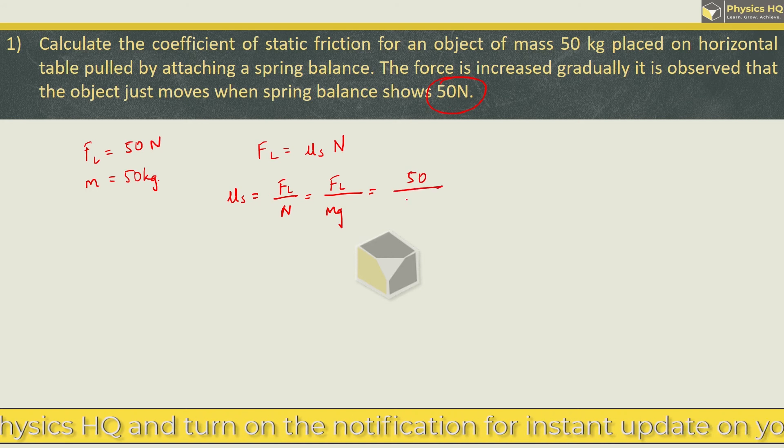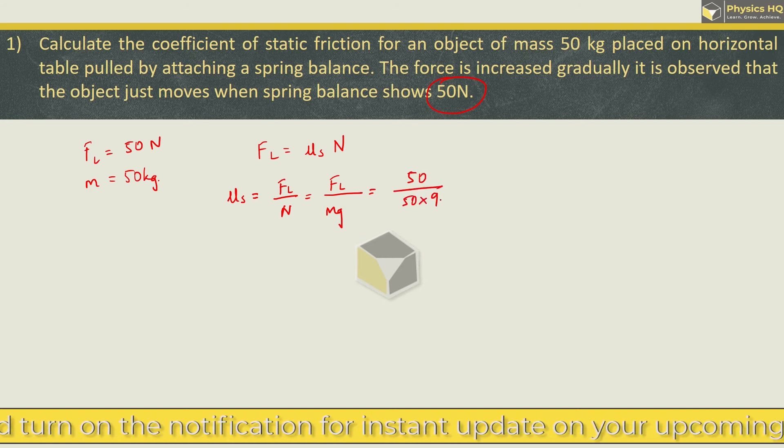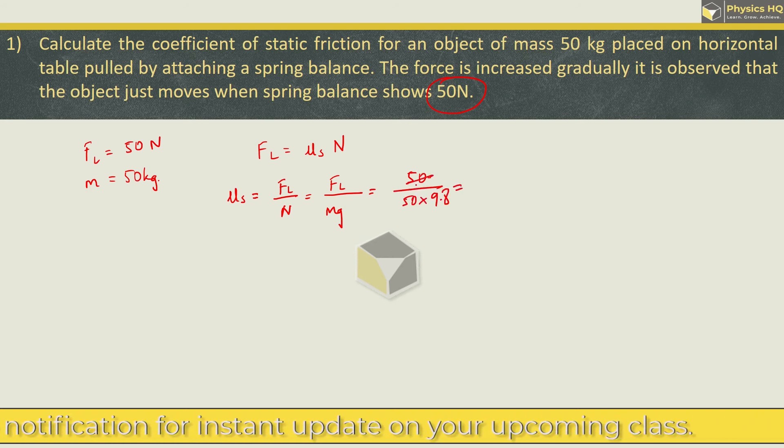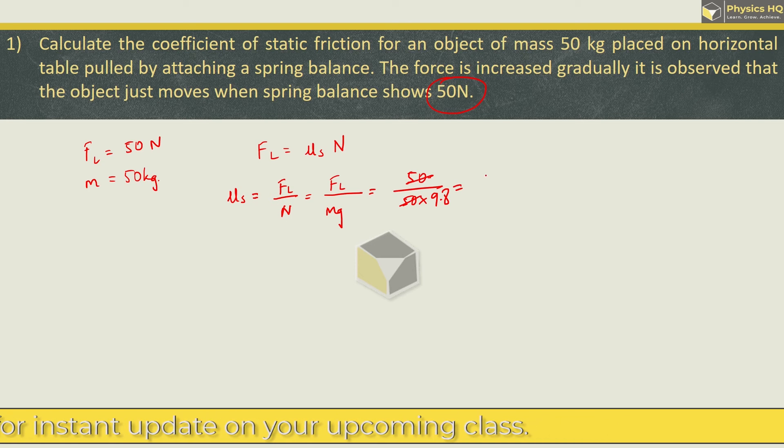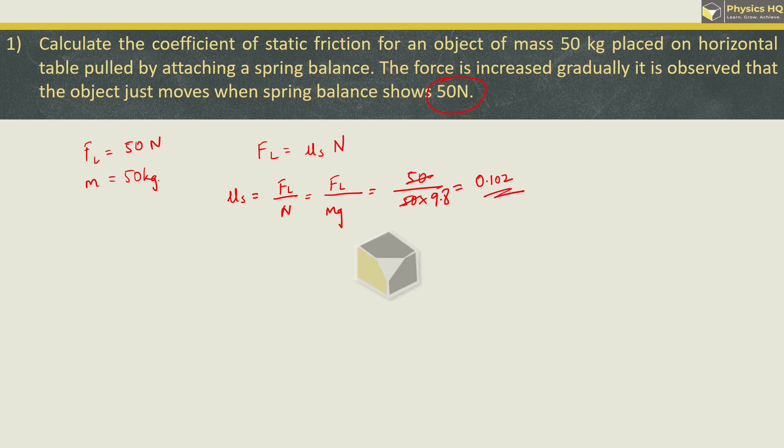Force is 50, mass is also 50, G value is 9.8. So this 50-50 will cancel. 1 upon 9.8, you will see the reciprocal log table. So you will get 0.102 as the answer. Hope you all understood this.